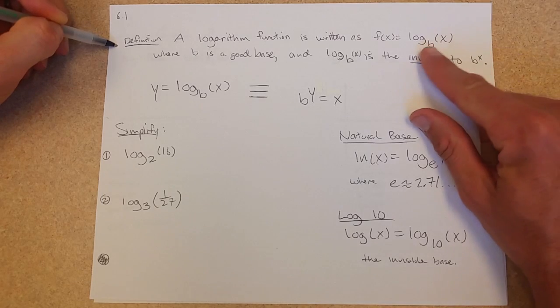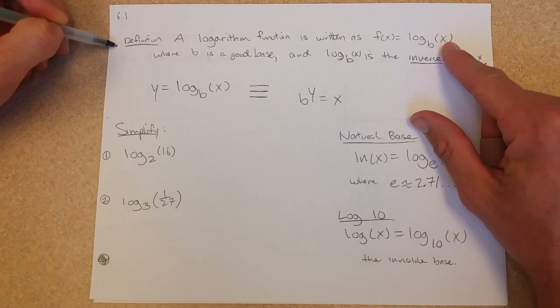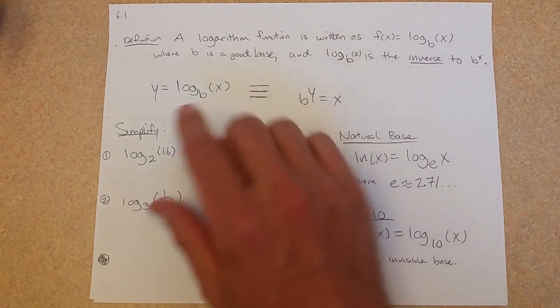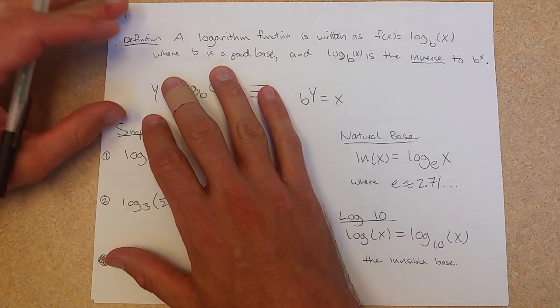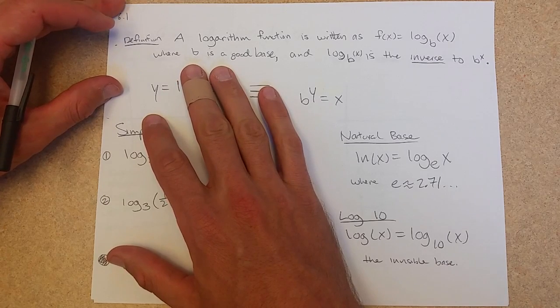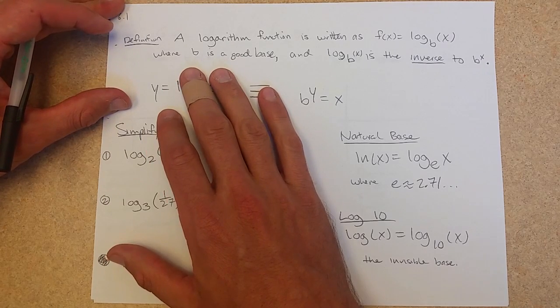Logarithms. The way we write a logarithm is log base b of x. It's a function, and b is a good base, meaning it's between 0 and 1, or 1 and infinity, not equal to 1.